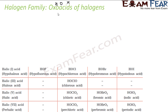Oxa acids can take different forms. HOX is called hypohalic acid, HOXO is halic acid, HOXO2 is halic acid, and HOXO3 is perhalic acid.